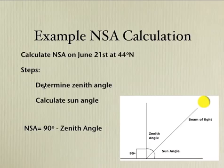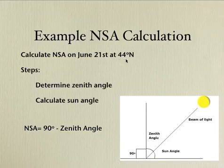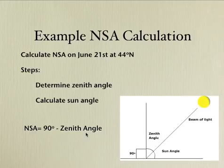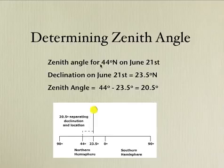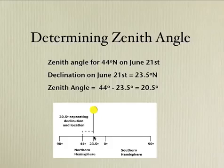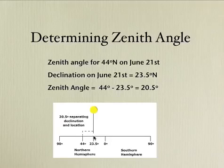To calculate the noon-sun angle, there are basically two steps: first, we'll determine the zenith angle, then we'll calculate the sun angle. We're going to use an example for June 21st, the summer solstice, for a location of 44 degrees north. The noon-sun angle equals 90 minus the zenith angle. For this example, we're at 44 degrees north latitude — here on this diagram. We know that the declination on June 21st is 23 and a half degrees north latitude, so the sun appears directly overhead at noon on June 21st, or the summer solstice.